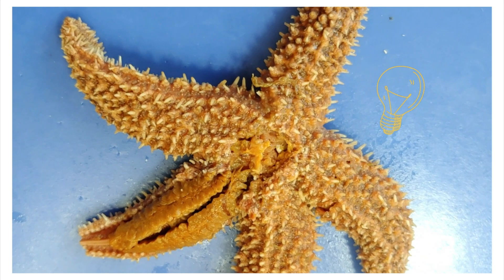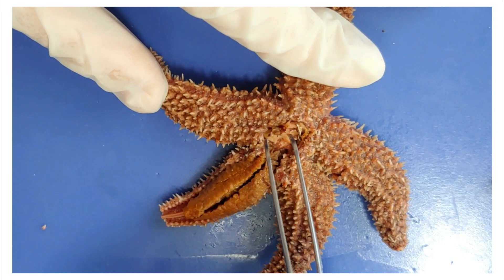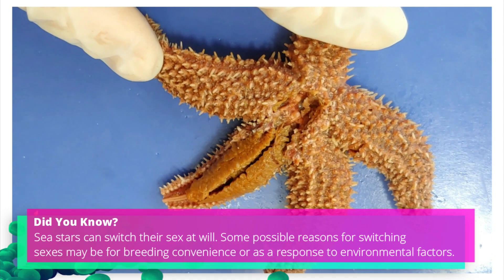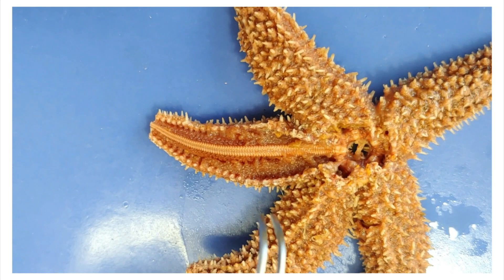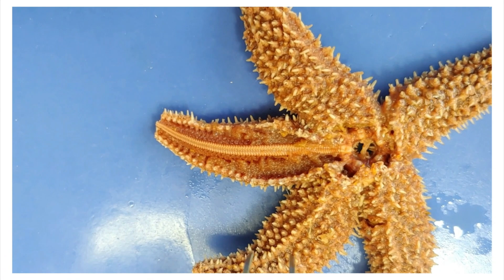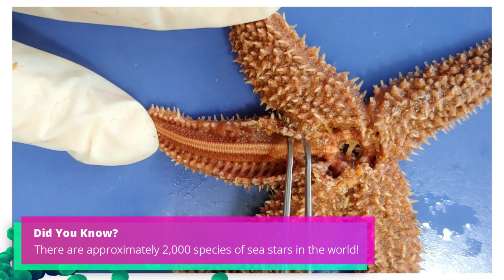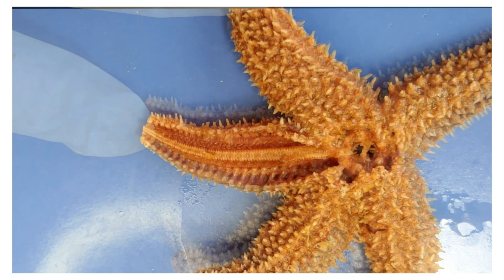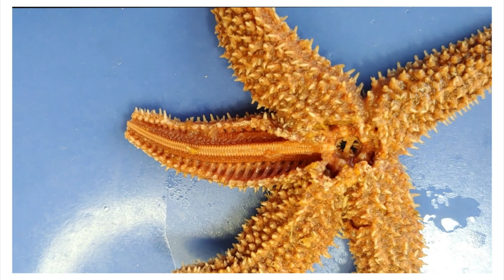Now I'm going to remove the digestive system structures so we can see what's underneath. Here in each radial arm, below the digestive glands, are the reproductive organs — there are two in each radial arm, near the central disc. Sea stars have either male or female reproductive organs, but you can't tell because they look the same. Sea stars can also reproduce asexually through a remarkable regeneration ability. If you tear a sea star into five pieces, as long as each piece has a part of the central disc, you'll end up with five sea stars.